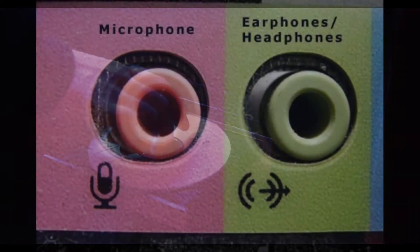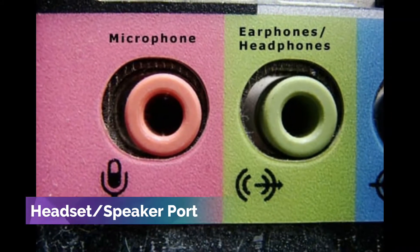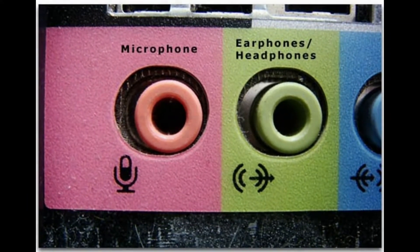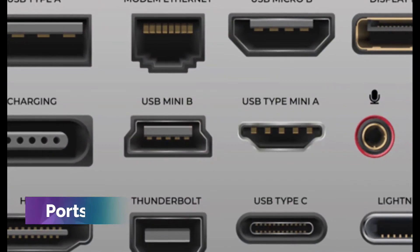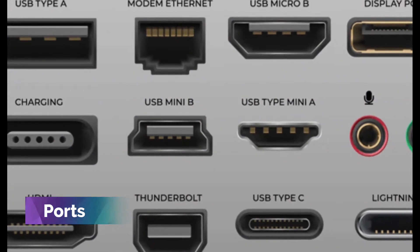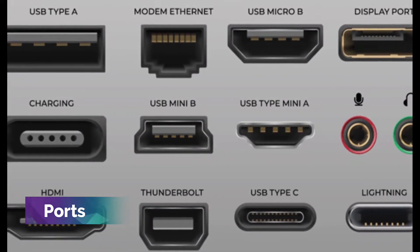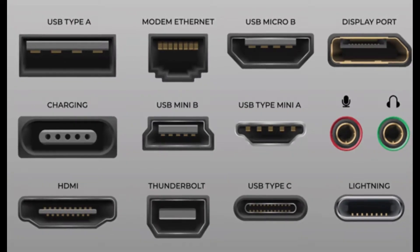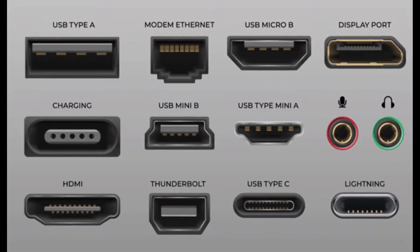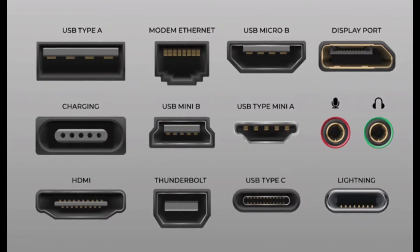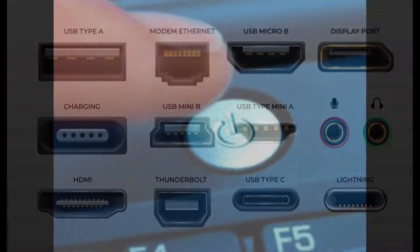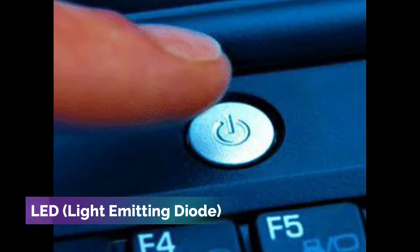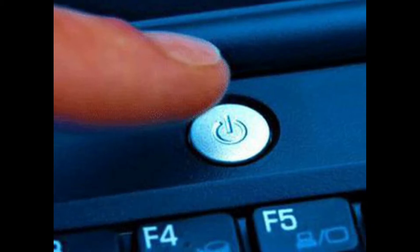The headset or speaker port is where the socket of the headset or speaker is inserted. Ports are the holes at the back of the system unit. By using cables, the ports help connect other parts such as the monitor, mouse, printer, joystick, and more. The LED or light emitting diode is the blinking light around the power switch that lets you know if the computer is turned on.